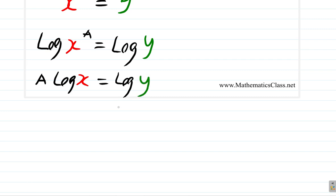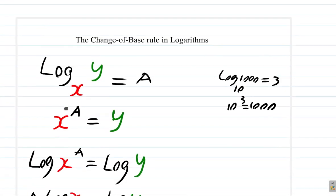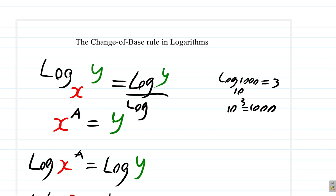So A times log x is equal to log y. You want A, so divide both sides by log x. A is equal to log y over log x. So, log_x(y) equals log y over log x. This is what we call the change of base rule.